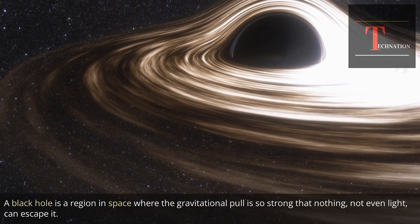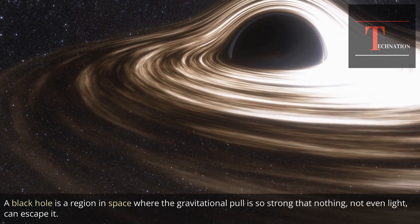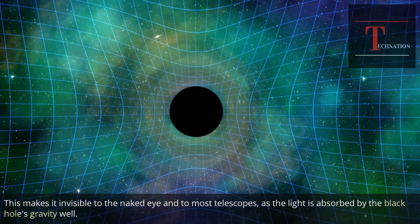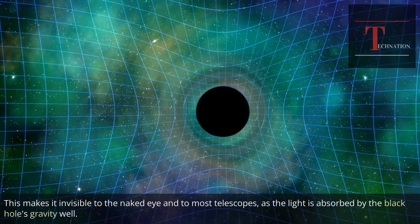A black hole is a region in space where the gravitational pull is so strong that nothing, not even light, can escape it. This makes it invisible to the naked eye and to most telescopes, as the light is absorbed by the black hole's gravity well.